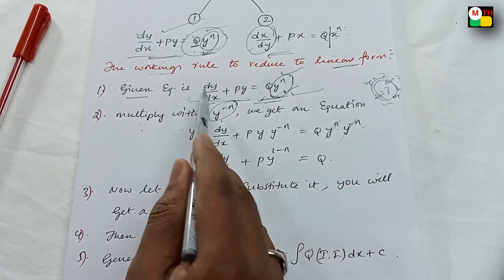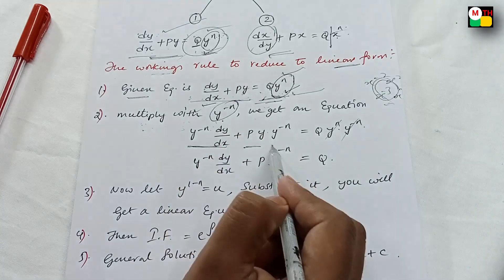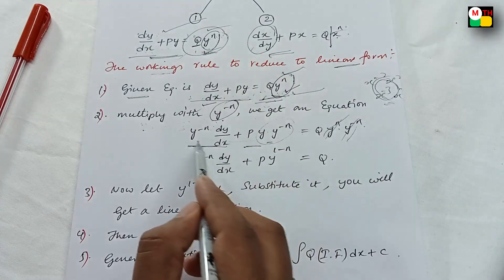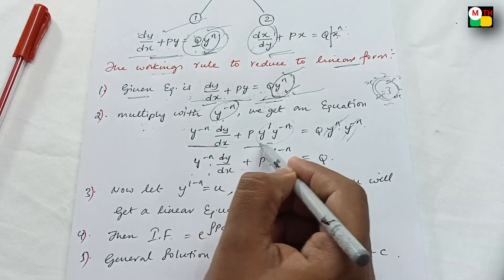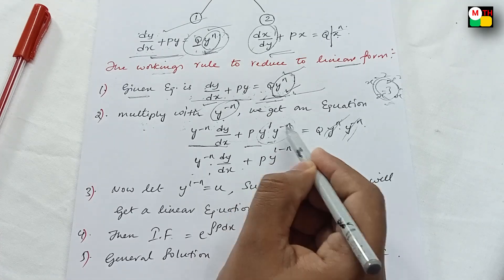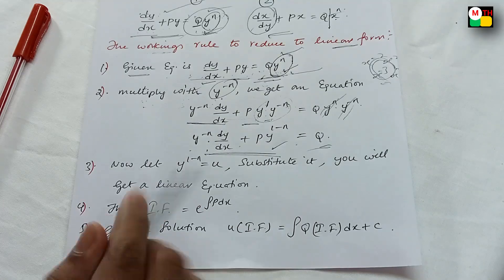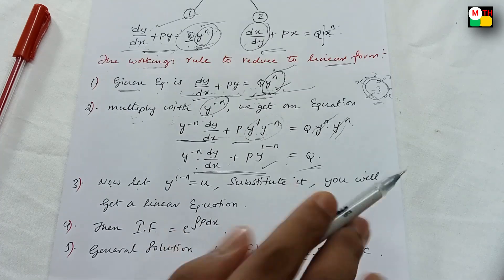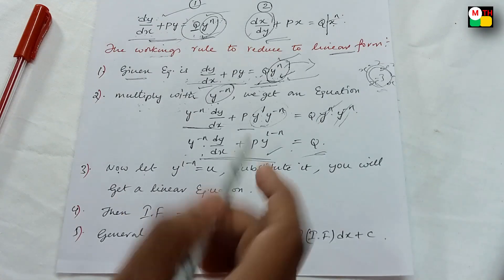dy/dx times y power minus n, plus P times y times y power minus n, equal to Q times y^n times y power minus n. The y^n and y power minus n cancel. So dy/dx plus P times y power (1 minus n) equal to Q. Using a^m times a^n equals a^(m+n), so 1 minus n. That's the equation — that's the problem. Now let us do the problem: q power minus n value reverse, first step.